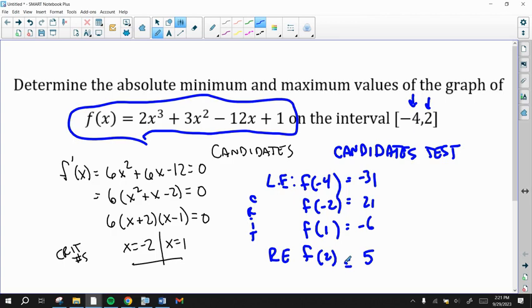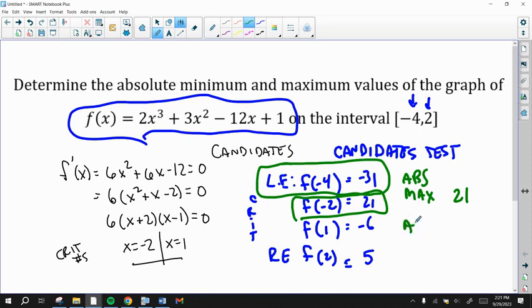So that's all the possibilities for a minimum and max. The greatest number is the highest it gets on that interval. So the max is 21. And the minimum is at the left endpoint, which is negative 31. That's basically how you do all absolute min max questions. It's pretty easy. Just follow the candidate's test and you should be okay. And that's all I got. See you next time.